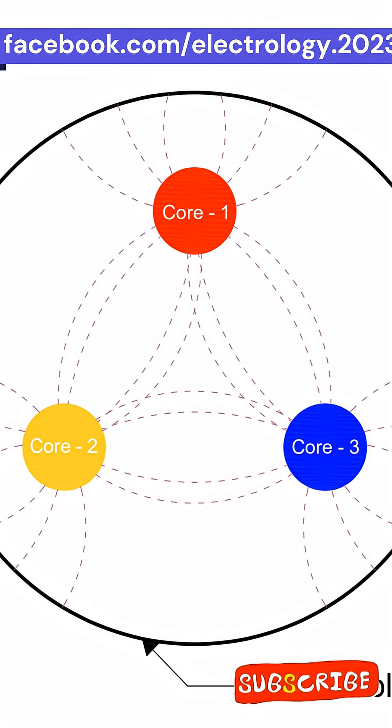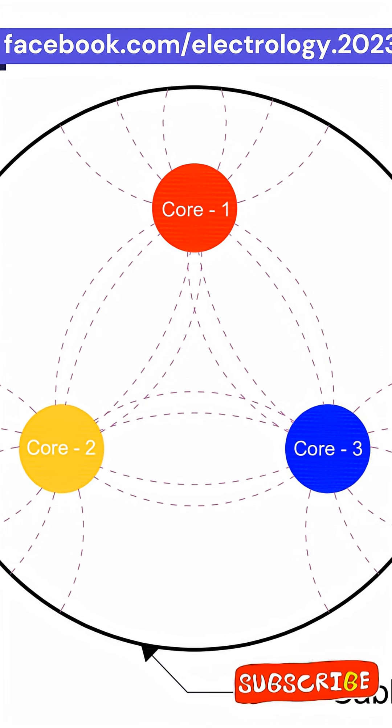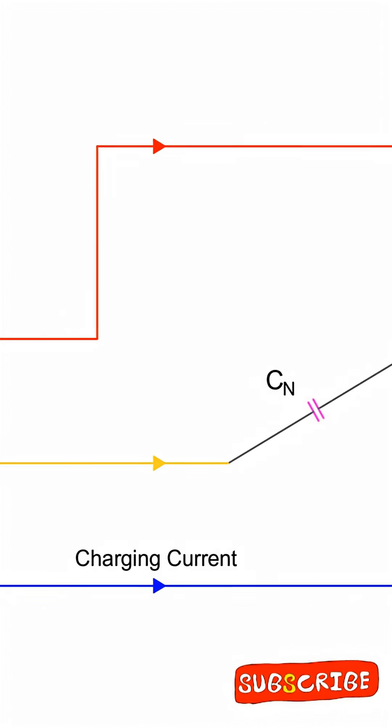Because the conductors are super close, the electric field becomes stronger. And boom, capacitance shoots up. And the funny part?